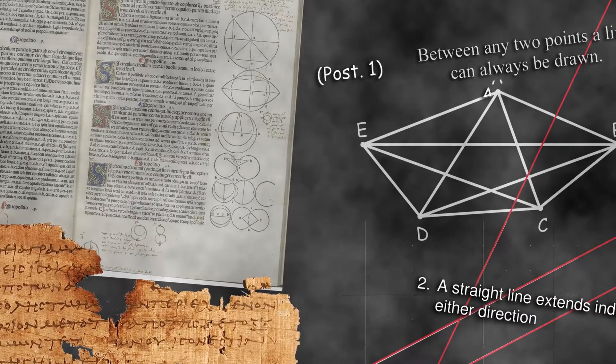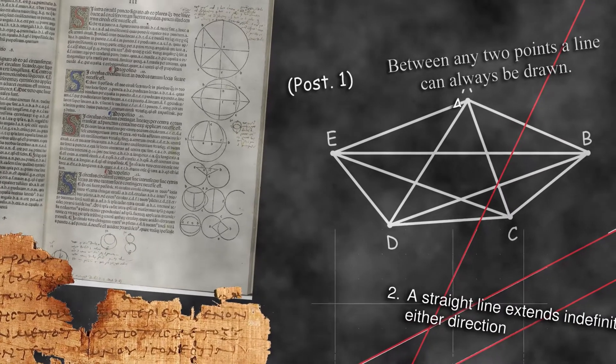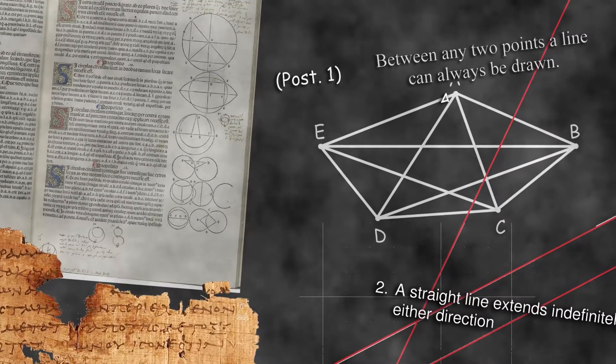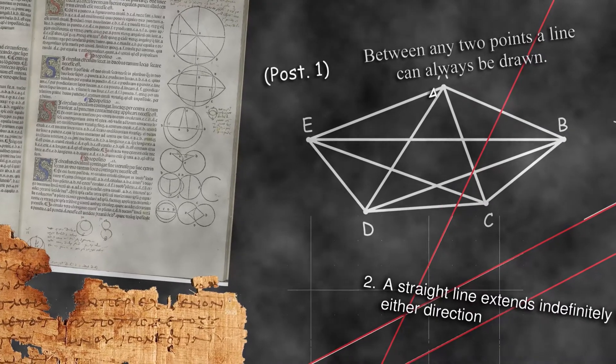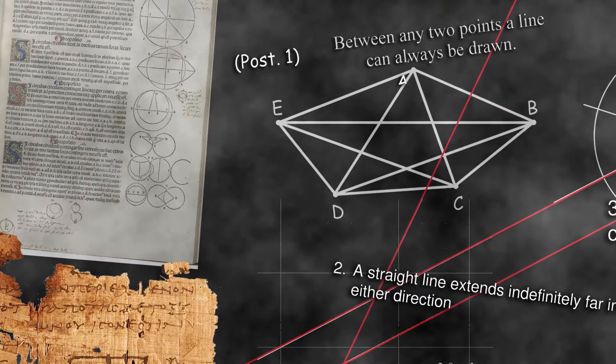Euclid's great accomplishment was not in the uncovering of new facts about geometric shapes, but in combining geometrical theorems into a coherent framework of basic theory and proofs. This is the basis of modern science.